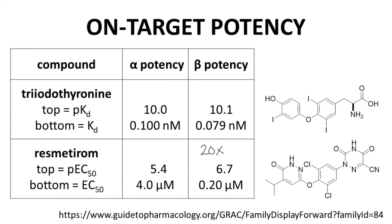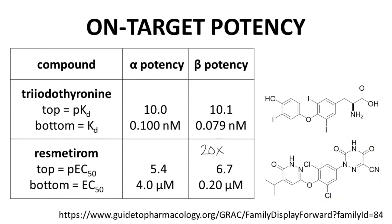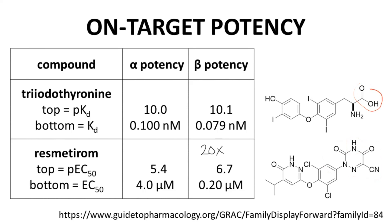With both structures on screen, the structural similarities between triiodothyronine on top and resmetirom on the bottom should be clear. If we consider a different atropisomer of resmetirom, both compounds share an OH group in the same position. Additionally, the heterocycle on the right side of resmetirom is highly acidic and will be deprotonated at physiological pH, just like the carboxylic acid of triiodothyronine. Resmetirom is therefore highly analogous structurally to triiodothyronine.